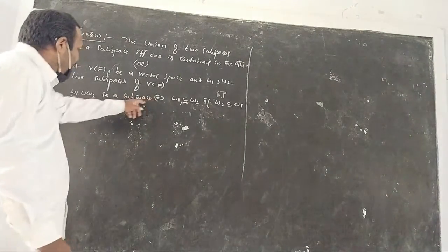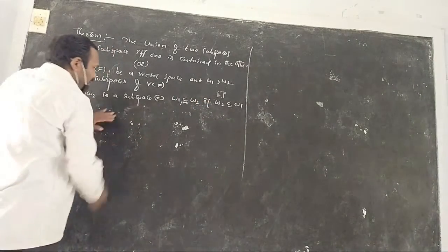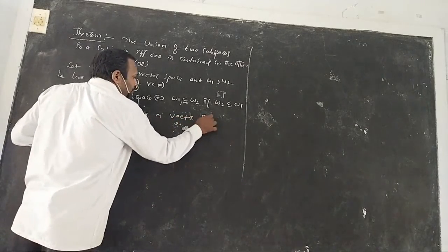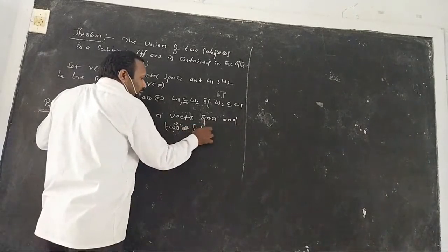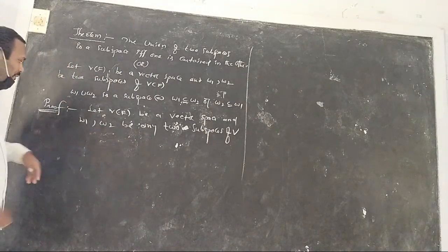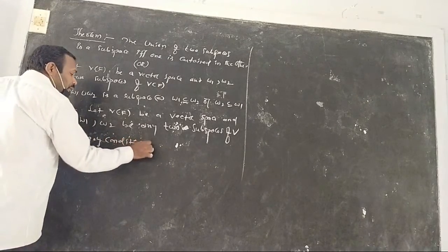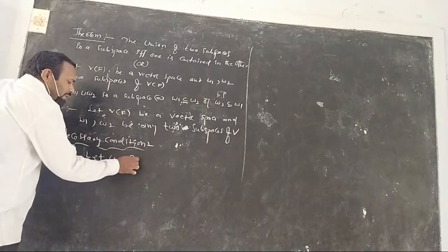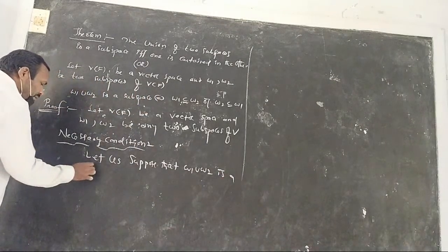In the necessary condition, we suppose this statement to be true, and we prove the other. We have V a vector space, and W1, W2 are two subspaces. Our claim here — let us suppose that W1 union W2 is a subspace of V.